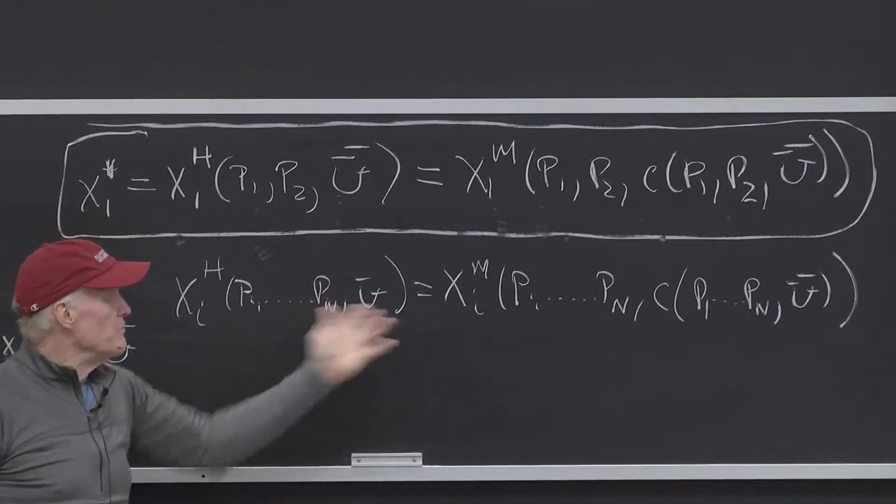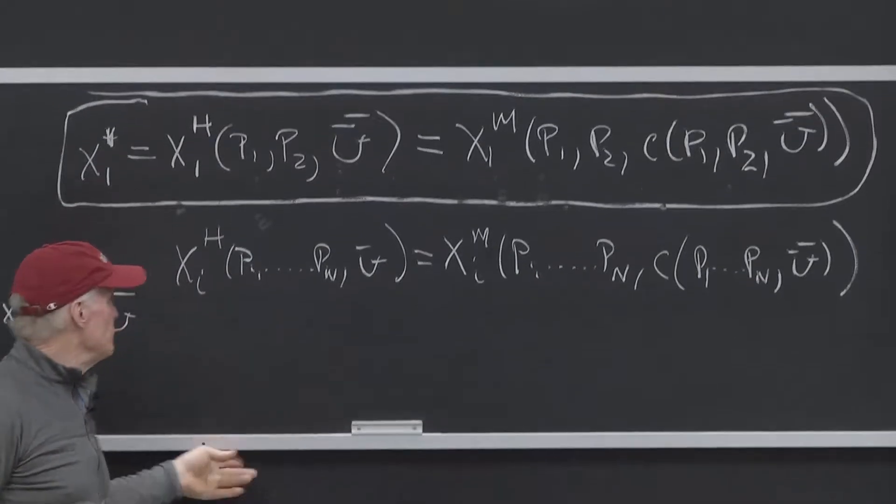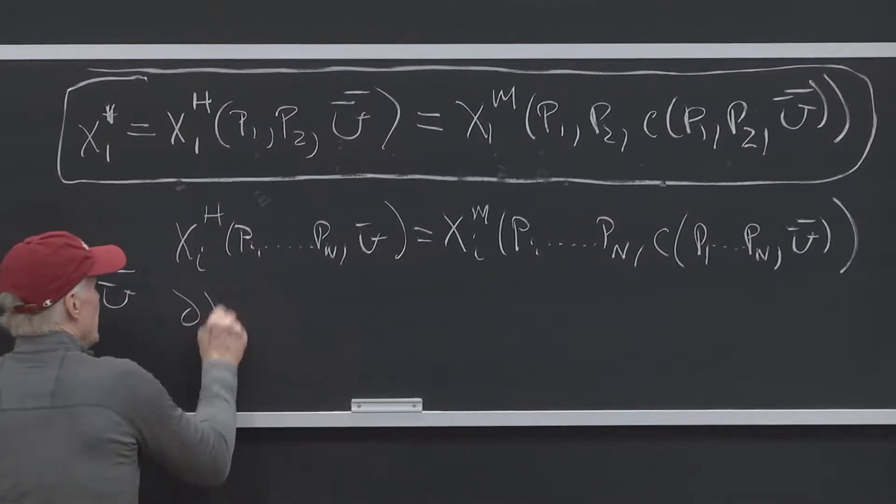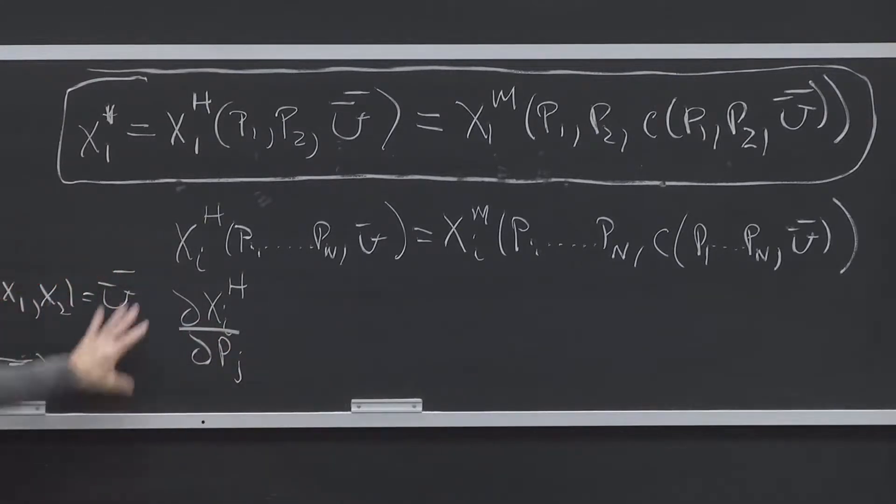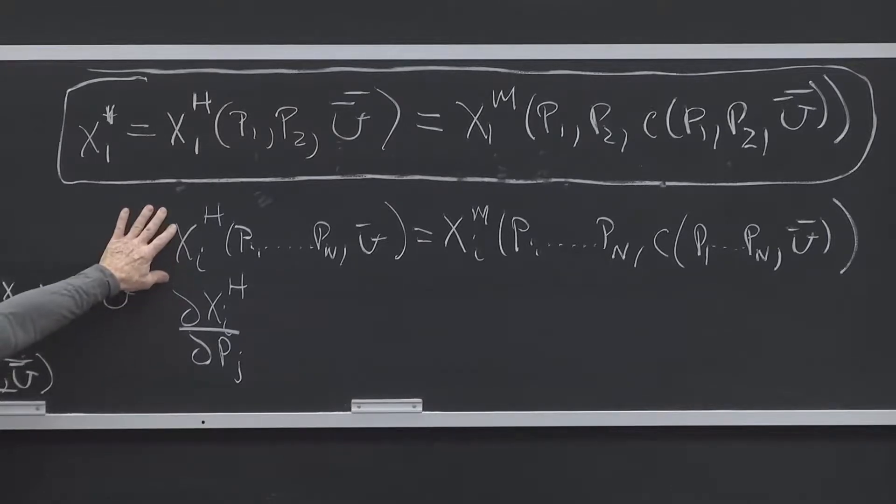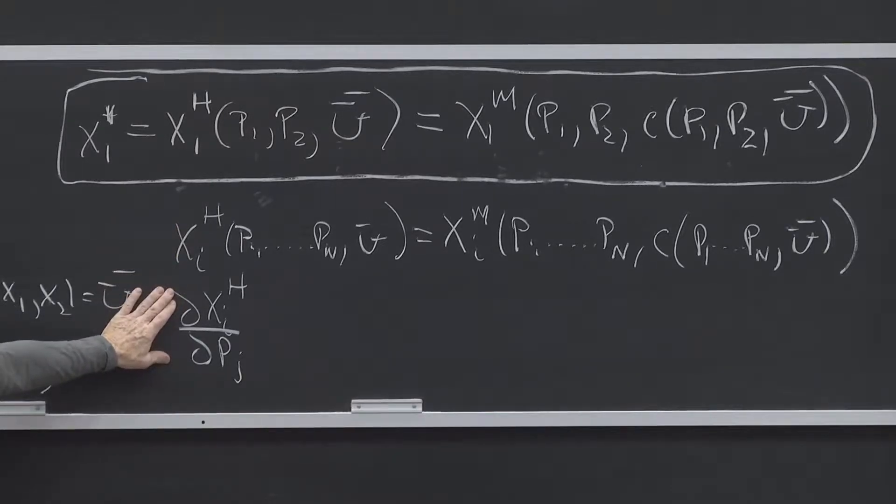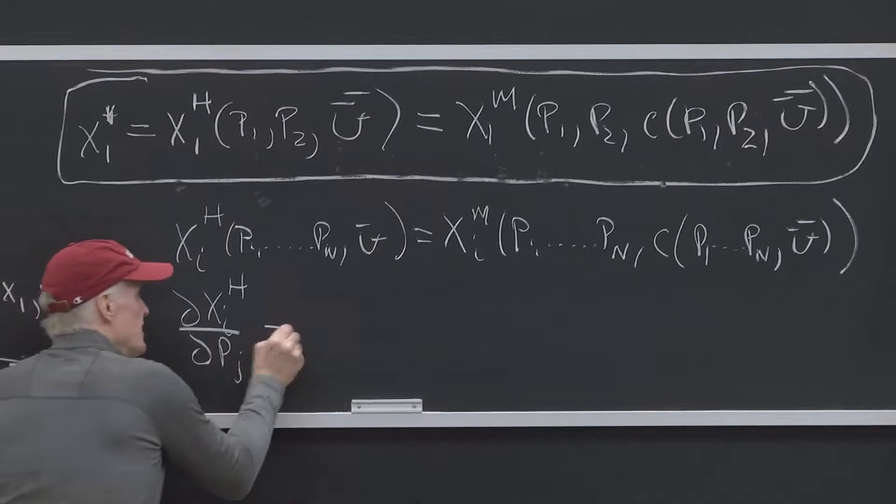So now if I take the derivative of both sides with respect to a price, I'm going to get partial XIH partial PJ on this side, because this is just the Hicksian demand curve, so the partial derivatives of that are just the partial derivatives of the Hicksian demand curve, is equal to what?